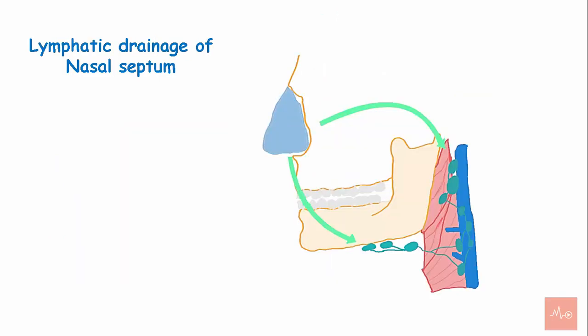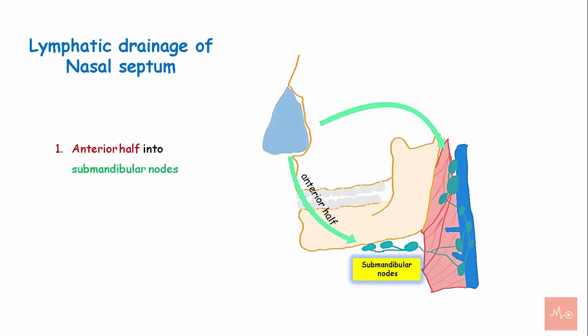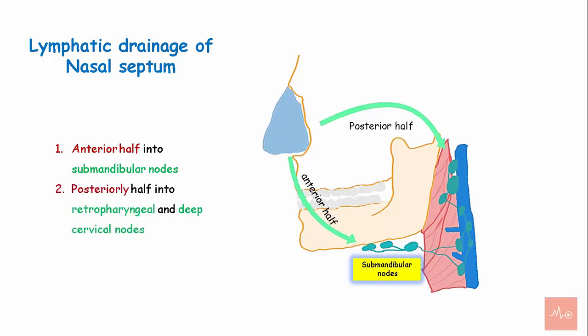Lymphatic drainage of the nasal septum. The anterior half of the nasal septum drains into the submandibular nodes, while the posterior half drains into the retropharyngeal and the deep cervical lymph nodes.